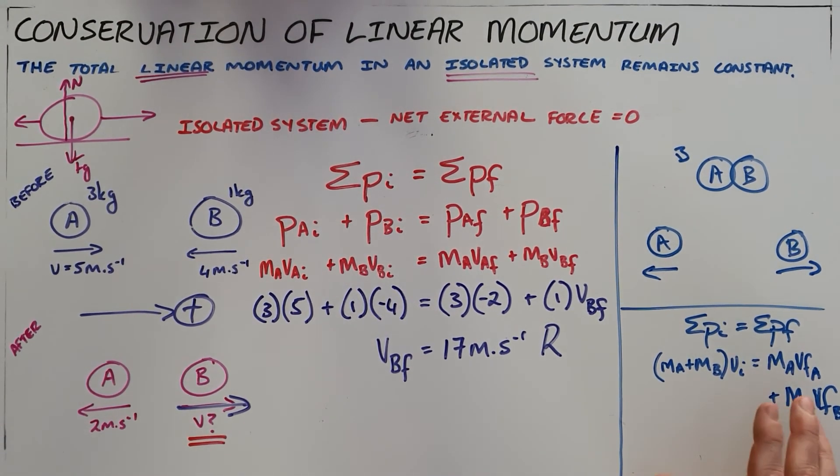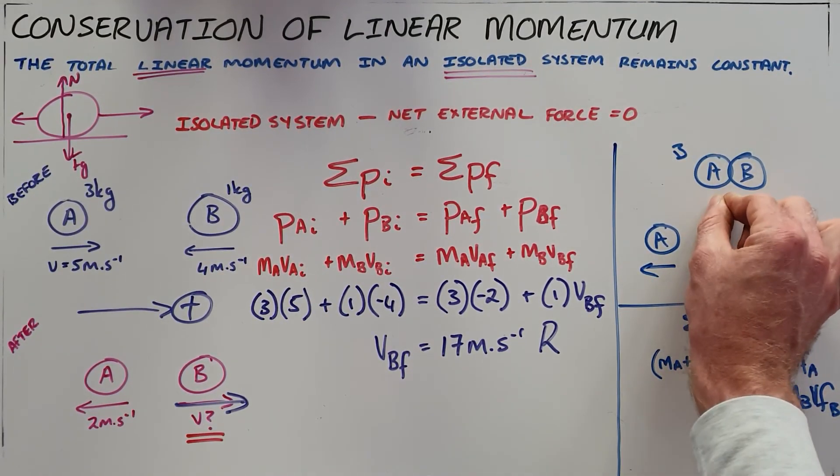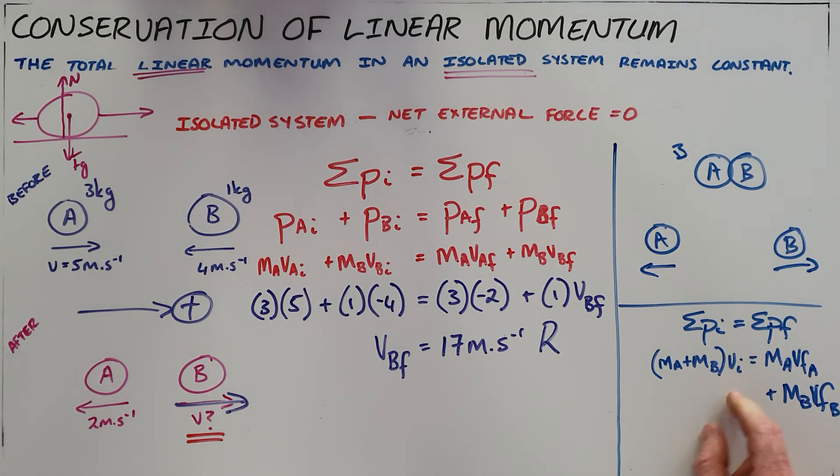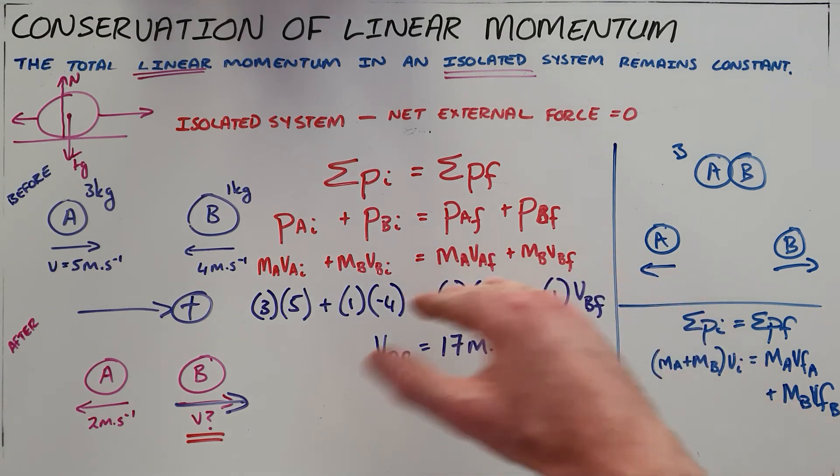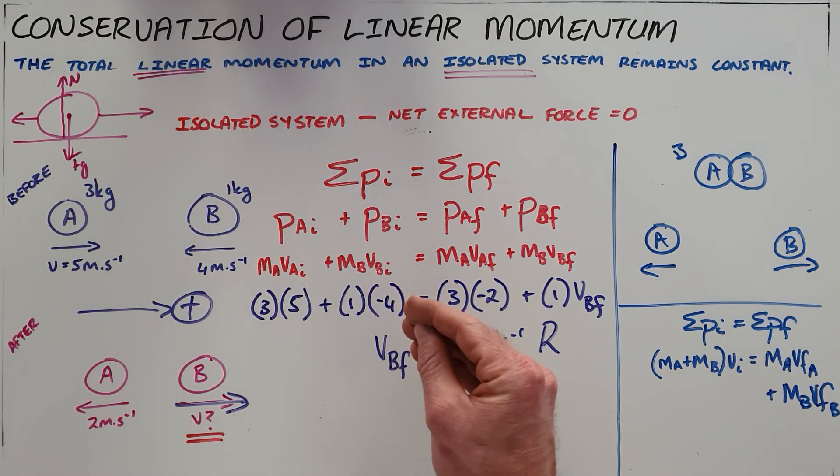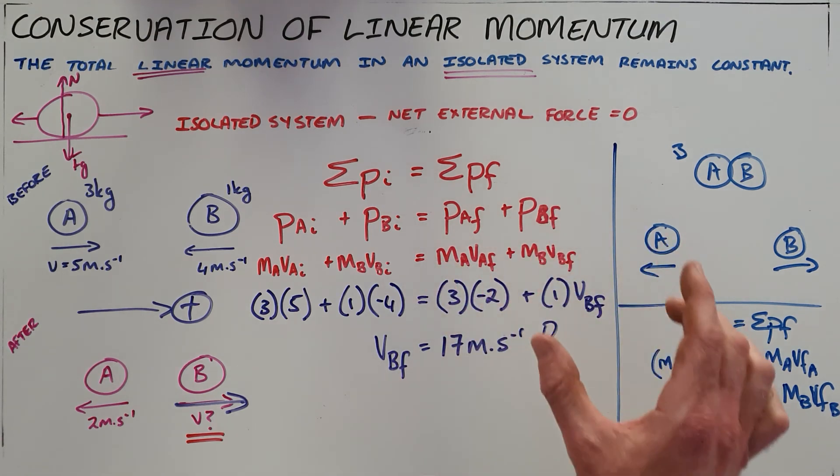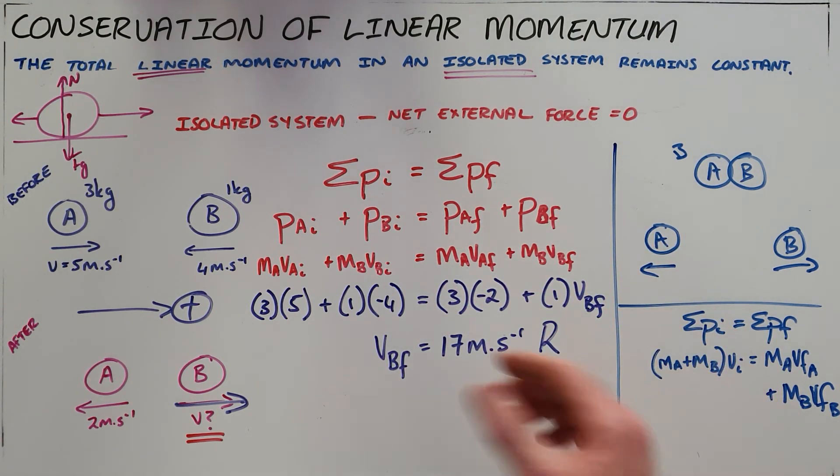Obviously the reverse of this is also true. If you have a system in which two objects start out and then collide and become a single object, this formula is the same just the other way around. The principle of conservation of momentum applies in any isolated system and it just says that the total amount of momentum of all objects combined before a collision is equal to the total amount of momentum of all objects combined after a collision. This could apply for two, three, or four, or however many objects are in the system.